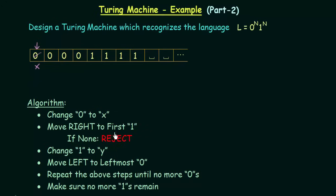Then you have to move the tape head right until you find the first one. I move one step to the right, one step to the right, one step to the right, and when I take the next step to the right, I find my first one. When we find the first one, we change that one to Y. Then we move left to find the leftmost zero. I keep moving left, and here I find the leftmost zero — because the cell before it is now an X, not a zero.